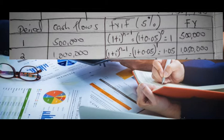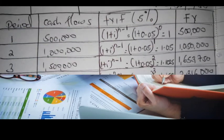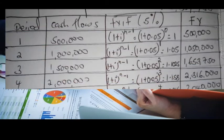That gives us 1,050,000 — the future value in year two. For year three, our cash flow is 1.5 million. The future value interest factor is (1 + 0.05)^2, which equals 1.1025. Multiplying 1,500,000 times 1.1025 gives us 1,653,750 shillings — the future value in year three.